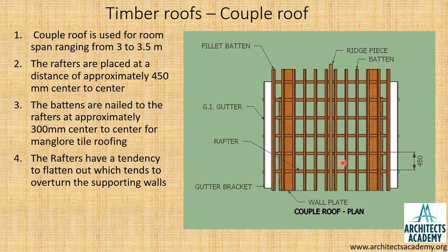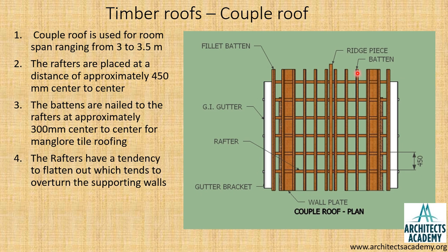The next slide shows the couple roof in plan. At the top is the ridge piece, which runs along the entire length of the roof. The numbered members — 1, 2, 3, 4, 5, 6 — are the rafters seen from above, spaced at around 450mm center to center. Perpendicular to the rafters are the battens, which are used to fix the tiles on the roof.